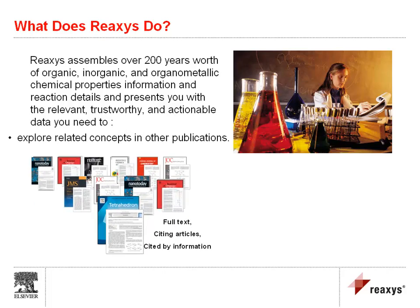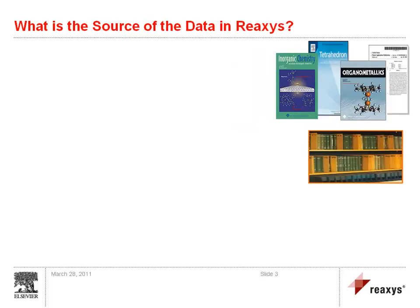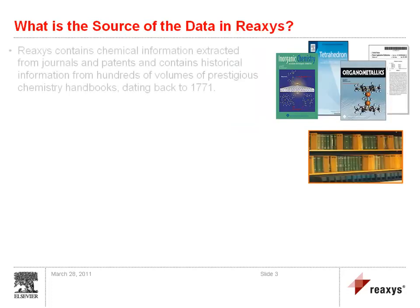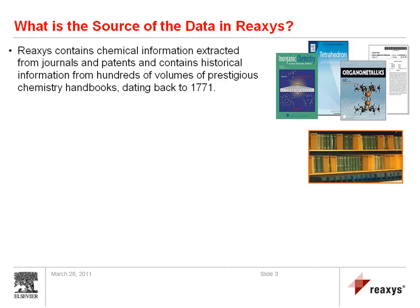ReAxis contains chemical information extracted from journals and patents, and contains historical information from hundreds of volumes of prestigious chemistry handbooks dating back to 1771.